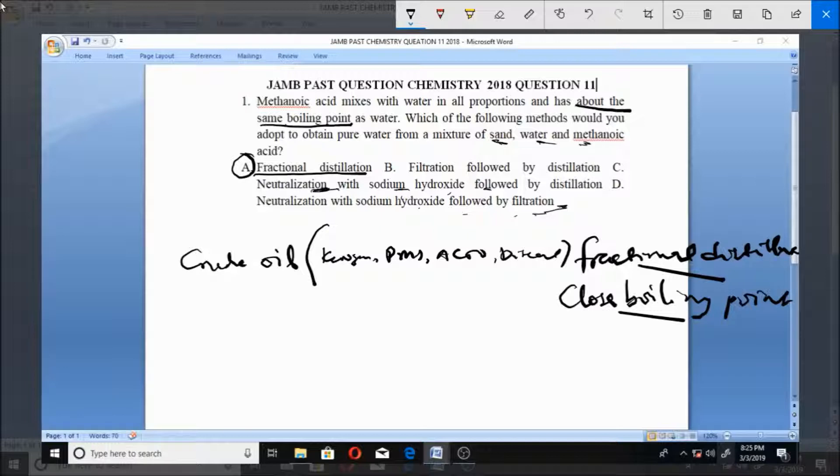If you're separating a solid from liquid, you can use filtration, but fractional distillation works better here. At the right temperature, the one with lesser boiling point will go out first. Either methanoic acid or water goes out first, then the next one goes out. Then you have your sand remaining. So these two components go out, then you have your sand left.